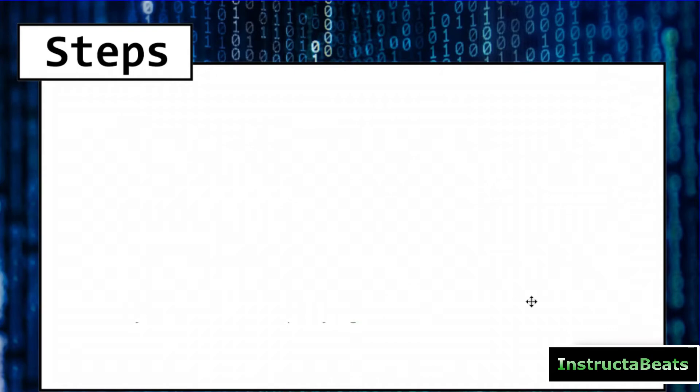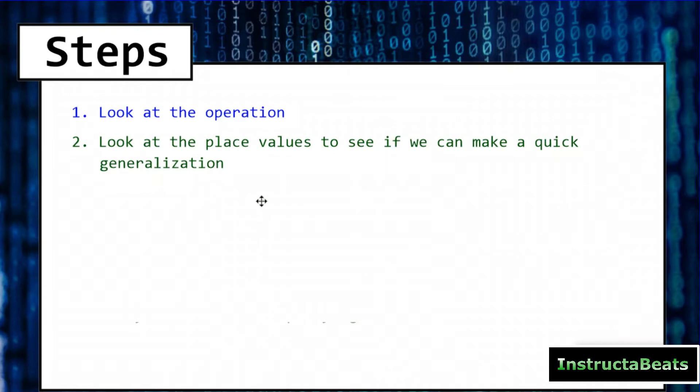All right, our steps. These steps are going to be the same as the other cryptorhythm lessons that we've done because our thought process is still the same, except we're going to be working in base 5. If you don't know what base 5 is, you probably should get out of this video and go do something else because your mind will be blowing! Step number 1, we're going to look at the operation. We need to know if we're adding, subtracting, multiplying, dividing because that's going to help us with step number 2, which is looking at place values to see if we can make a quick generalization.